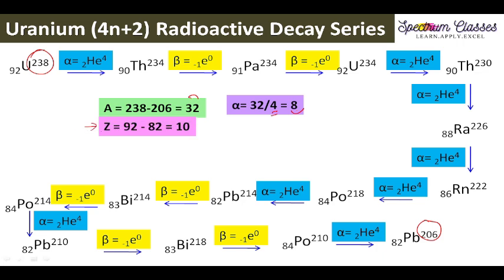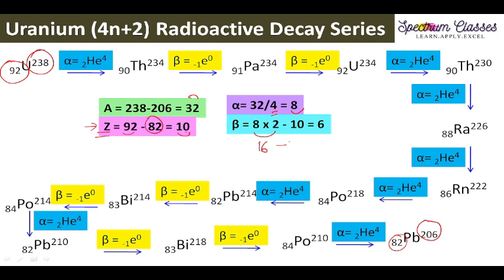The atomic number of uranium is 92 and of lead is 82; subtracting gives 10. On removal of 8 alpha particles the atomic number should decrease by 16, but it only decreased by 10, so 16 minus 10 gives 6 beta particles. Therefore 8 plus 6 gives 14 total steps: 8 alpha particles and 6 beta particles.